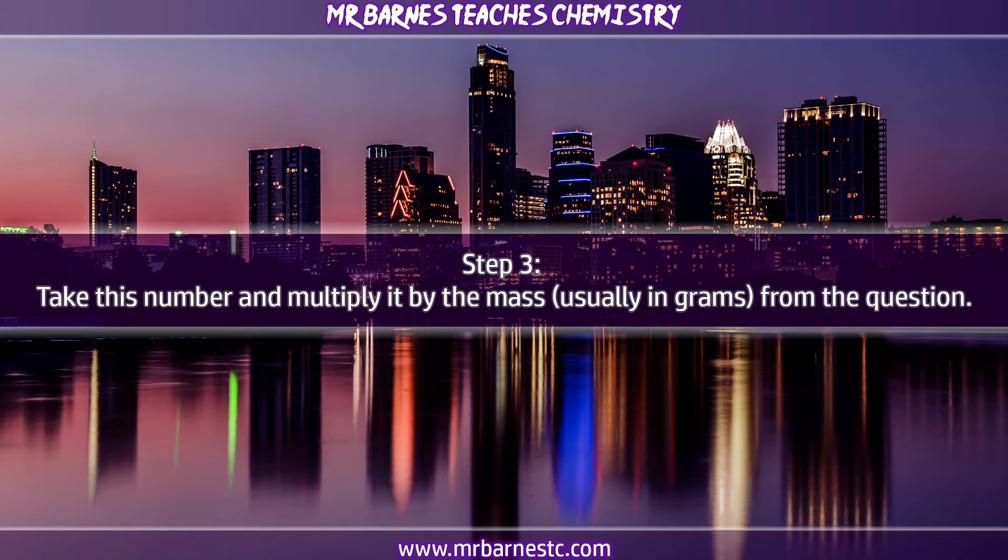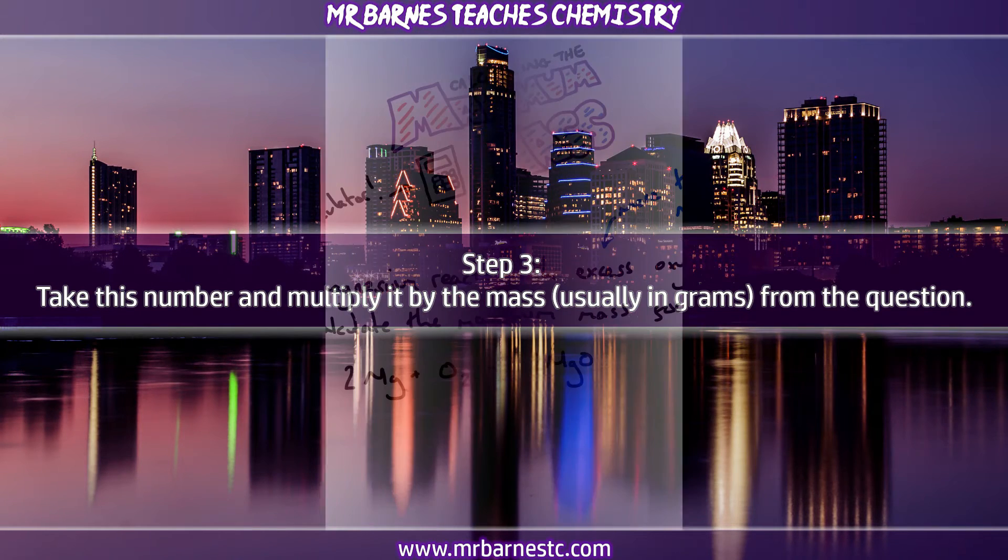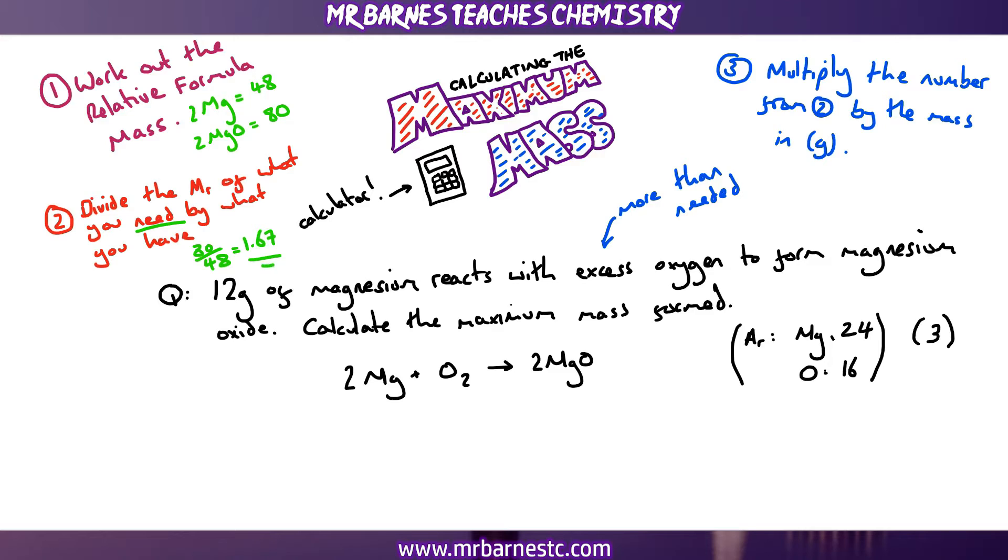And once you've done that, the final step is the easy one. All you do is you take whatever that number was and you multiply the mass that they give you in the questions. That's usually the mass in grams, could be tons, could be kilograms, whatever mass they give you. So the number we just worked out was 1.67. All we do is we take that number and we multiply it by the mass in the question. That was 12 grams. So 1.67 times by 12 comes to 20.04, 20 grams.